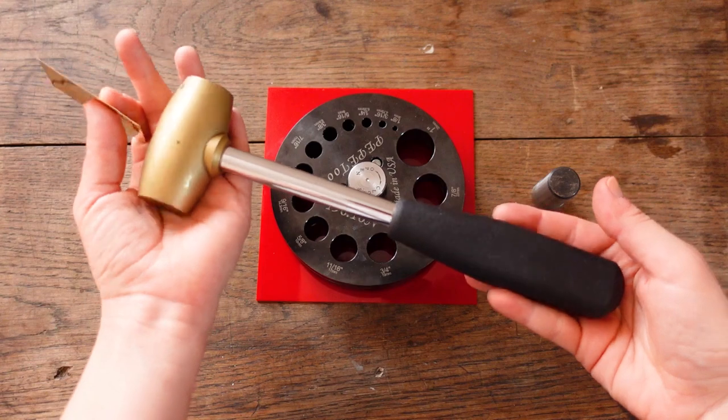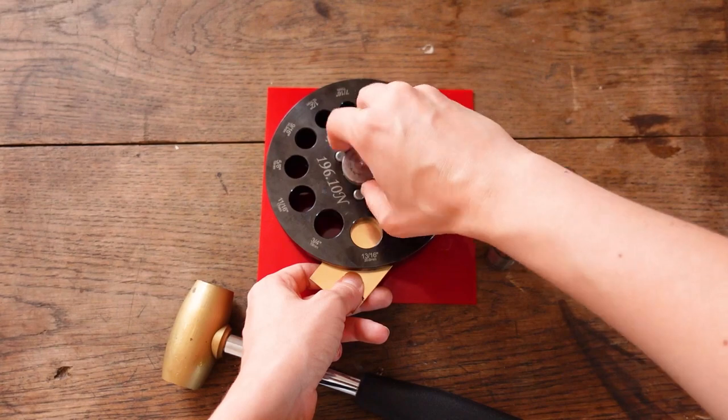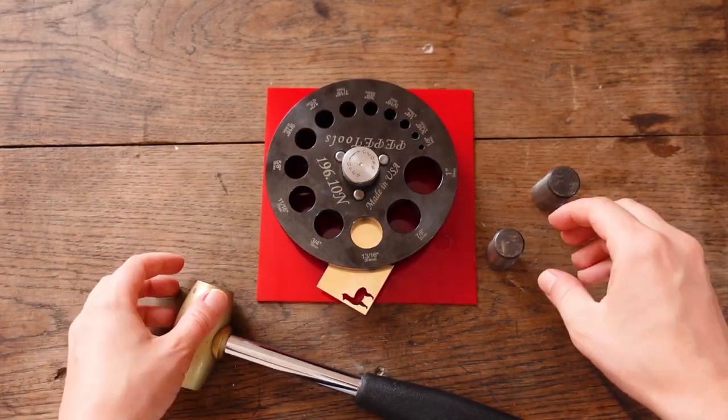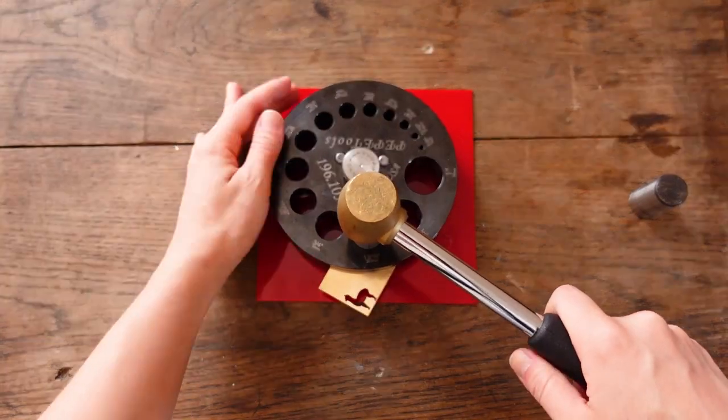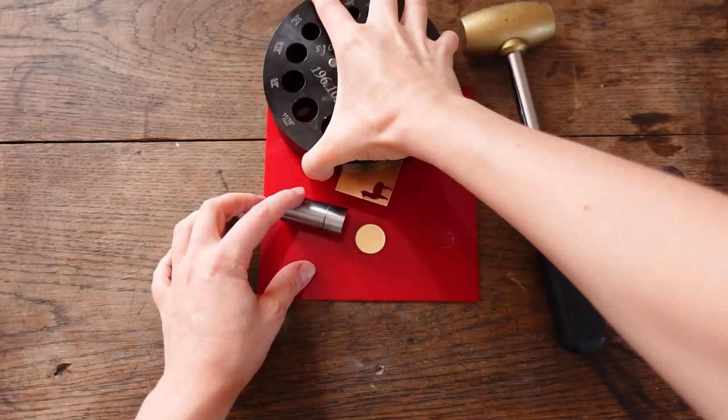I will cut the disc using a brass mallet as it has a proper weight and works best. Gold filled is harder than silver so it took me several blows to cut the disc.